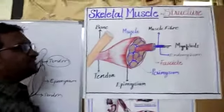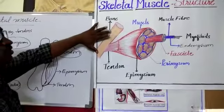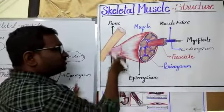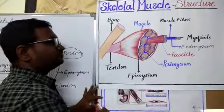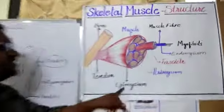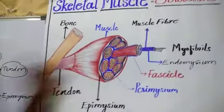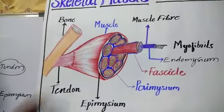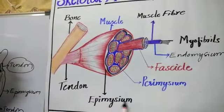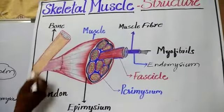Here you can see the skeletal muscle and the bone. The skeletal muscle is attached to the bone by a tendon. This tendon is the extension of the epimysium. The epimysium covers the total muscle — not the muscle fiber — and extends out to form this chord-like structure called tendon, which then attaches to the bone.